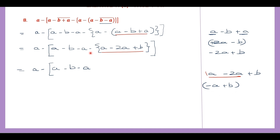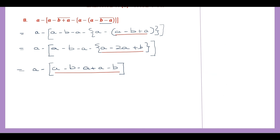Now this is what is within the curly brackets — we got minus a plus b. Look at the sign before that: it's minus. That means the signs of these will change, so this will become plus a minus b. So now plus a minus b is what we write here, removing the curly brackets. Now we only have the terms inside the square brackets to work out: a minus b minus a plus a minus b.